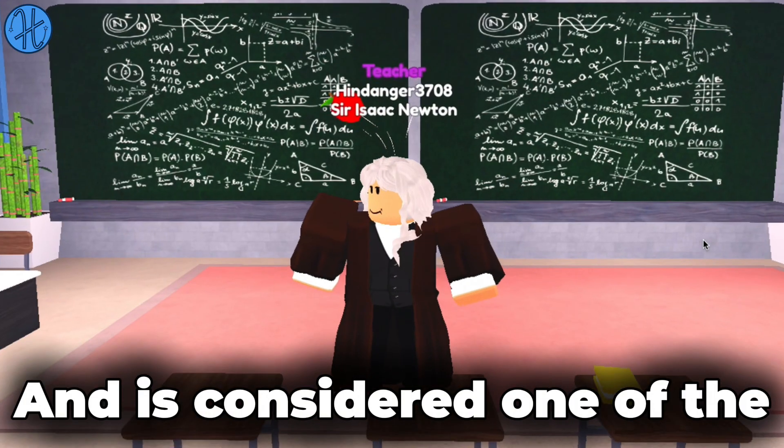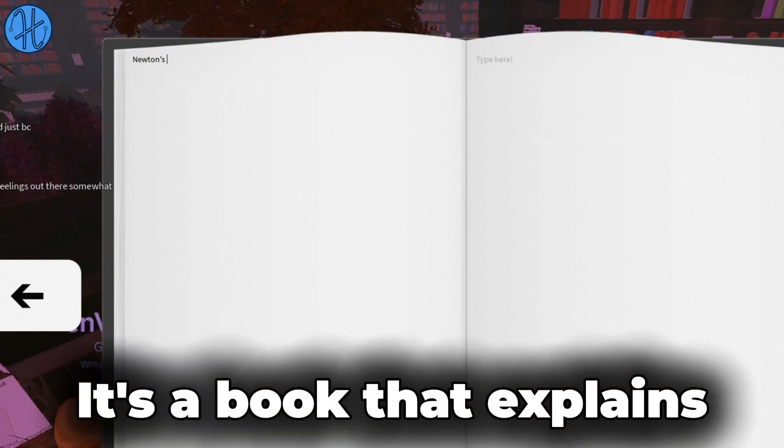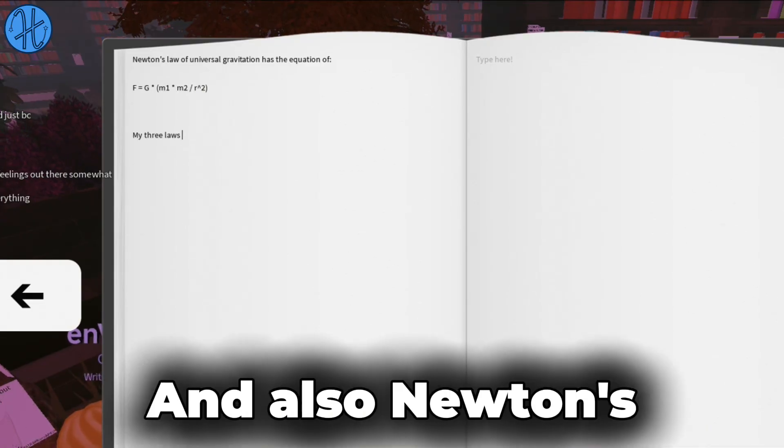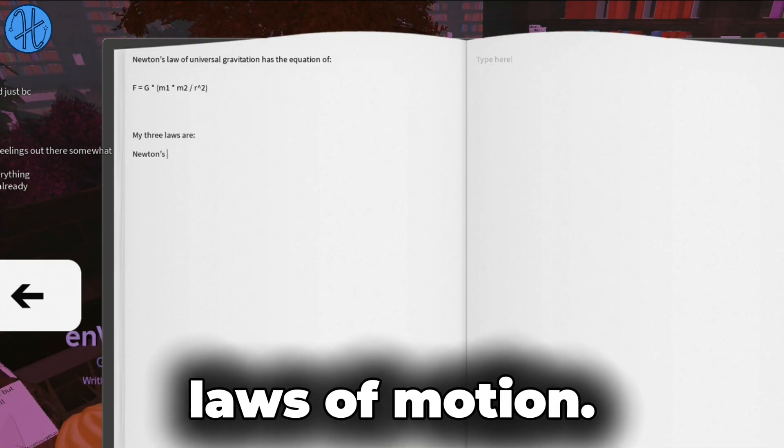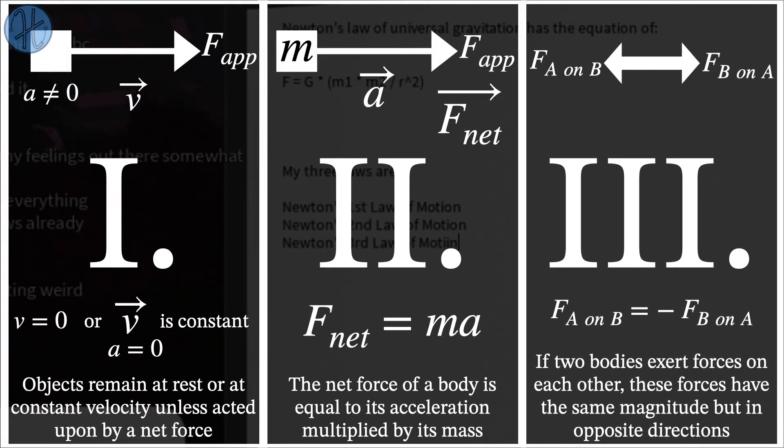It's a book that explains Newton's law of universal gravitation and also Newton's laws of motion. There are three physical laws that describe the relationship between the motion of an object and the forces acting on it.